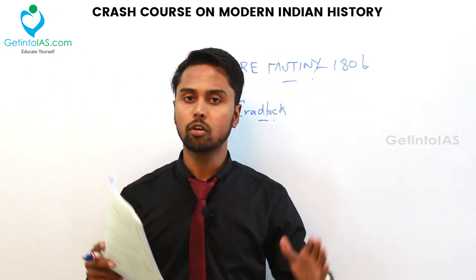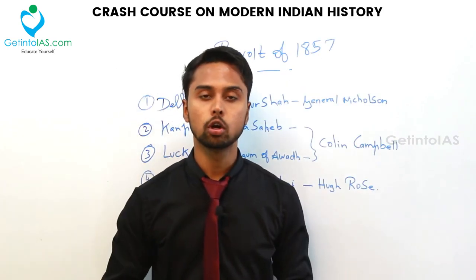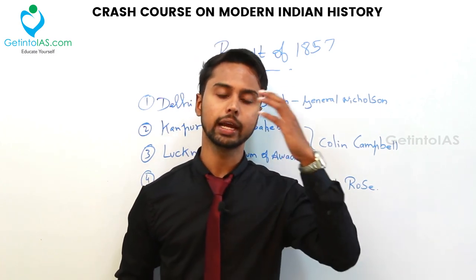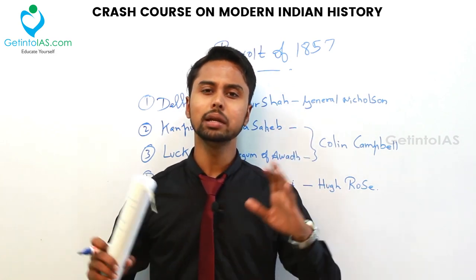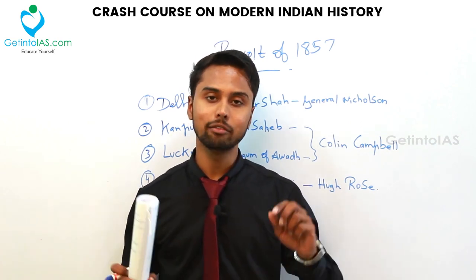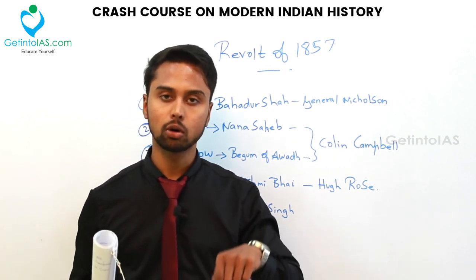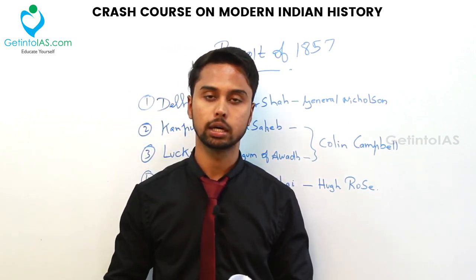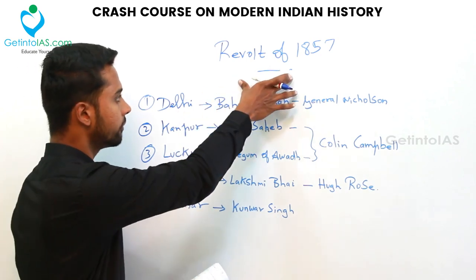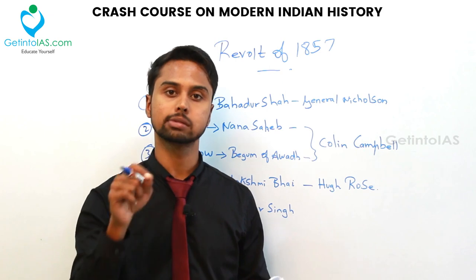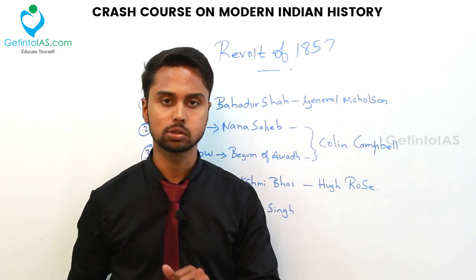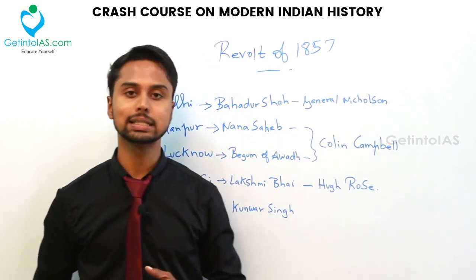Next, the Revolt of 1857 — very important in modern history. Before this revolt, there were many revolts and tribal uprisings, details of which are provided in a PDF with this video. The Revolt of 1857 was initially very successful for the Indians but was later suppressed. It gave great confidence to the Indians. The first cause is the economic cause: the British were plundering so much from the peasants that they became aggravated and wanted to demolish the British.